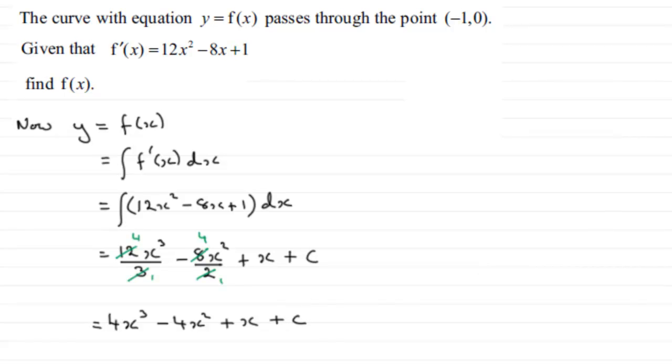Now we've got to work out what that constant of integration is. And to do that, we need some condition that we know is true. And it's this point here - we know that the curve passes through the point (-1, 0).